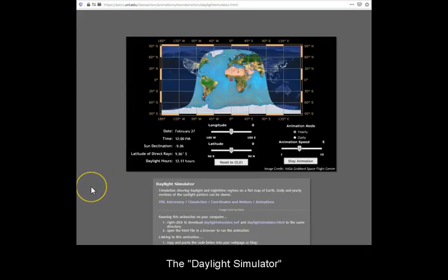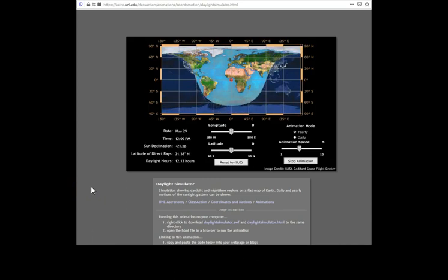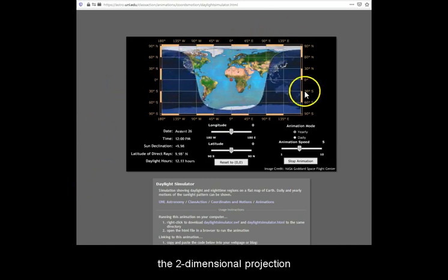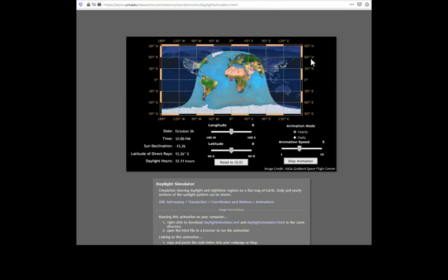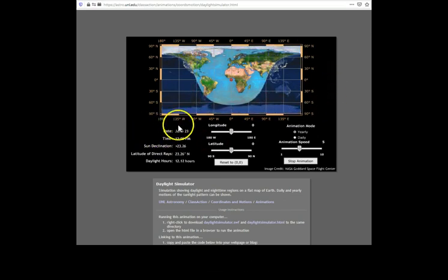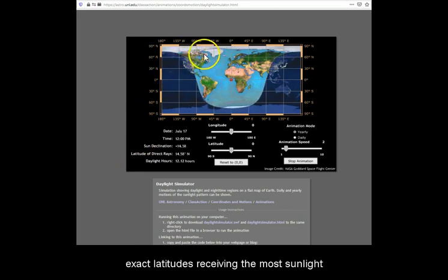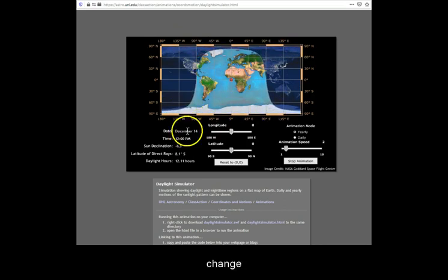The daylight simulator will show you the two-dimensional projection of the spherical Earth throughout the year, whereby the exact latitudes receiving the most sunlight change with calendar date.